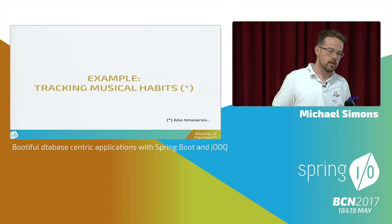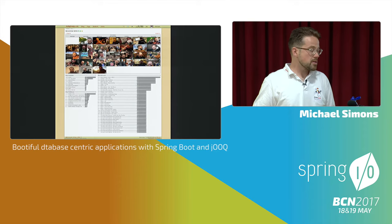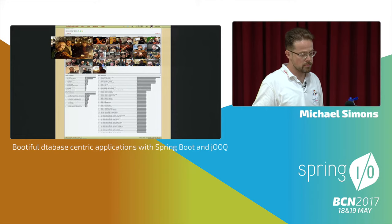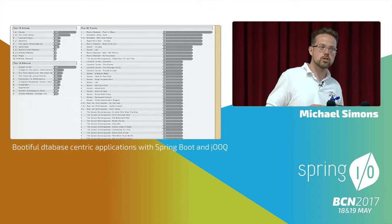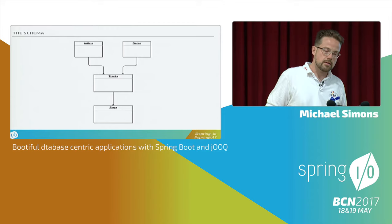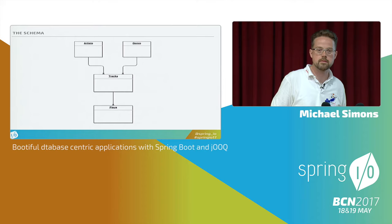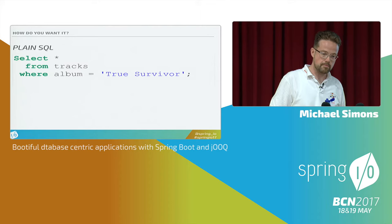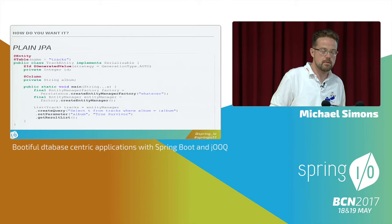My example today is tracking musical habits, which is also a kind of time series management. I have a daily photo project, and the guy in the picture with me is Lukas Eder from Data Geekery — the guy behind JOOQ — and this is what I'm talking about. Like music charts you'd see on MTV. There is a simple database schema behind it consisting of basically four tables: artists, genres, tracks, and plays. Where plays is the time series data stored in this application. For selecting all tracks from one album, I wouldn't use raw JDBC — I would use JPA, map this to an entity, and be done.